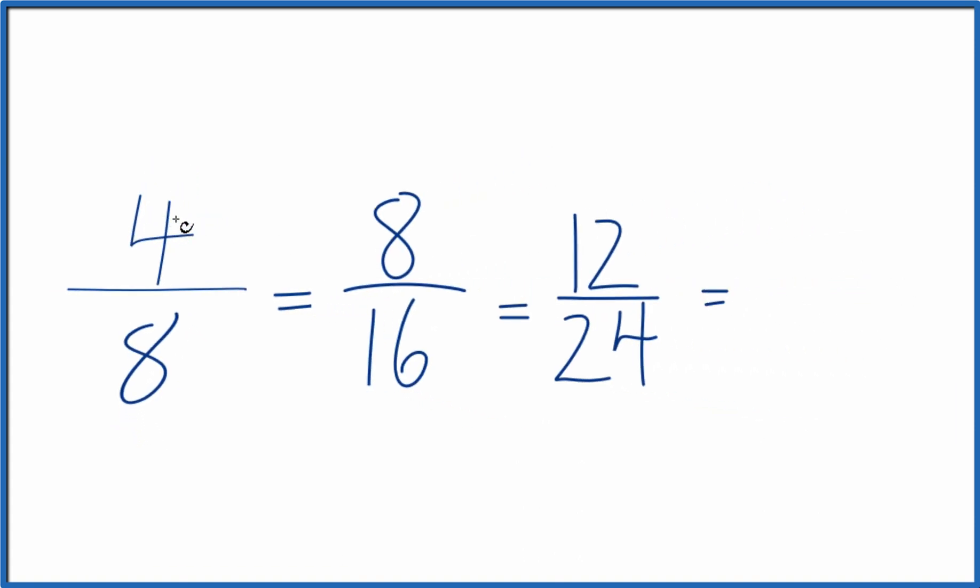Finally, why don't we do four times four and eight times four? Four times four is 16. Eight times four is 32.